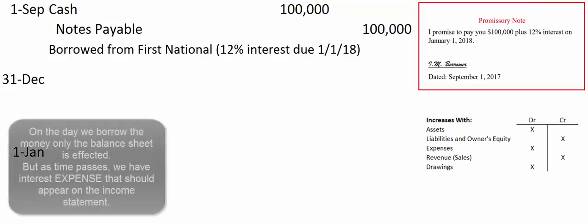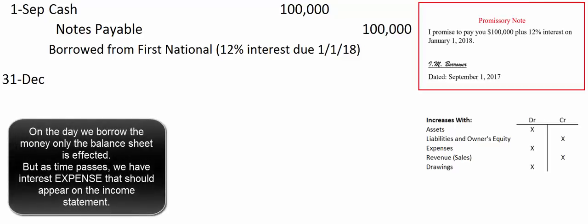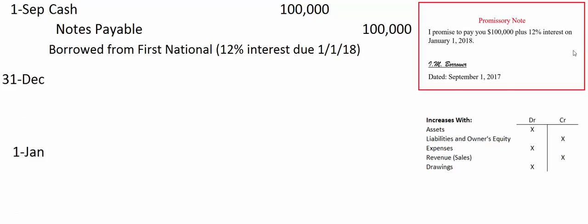We don't owe any interest on the day we borrow the money, but on September 2nd we owe one day's worth of interest, September 3rd two days, and it accrues over time. We could make adjusting journal entries every day, but let's say this company waits until the end of the year. We get to December 31st and now have interest expense due for September, October, November, and December — four months' worth of interest expense.